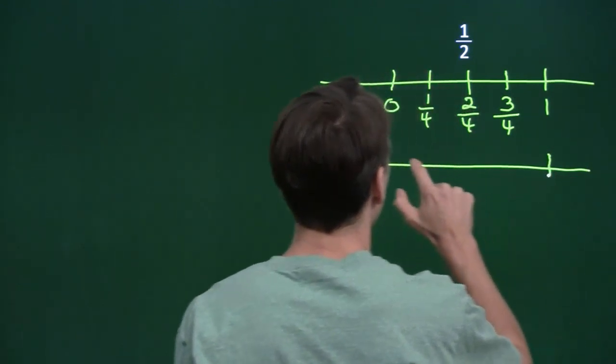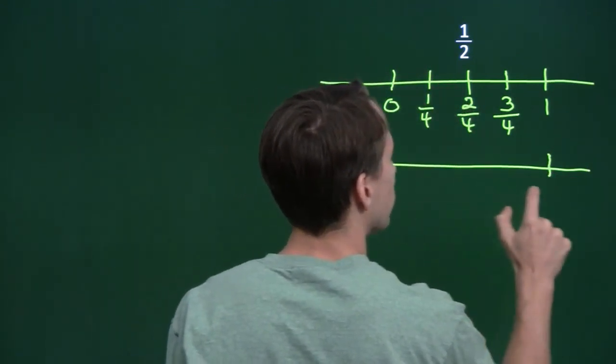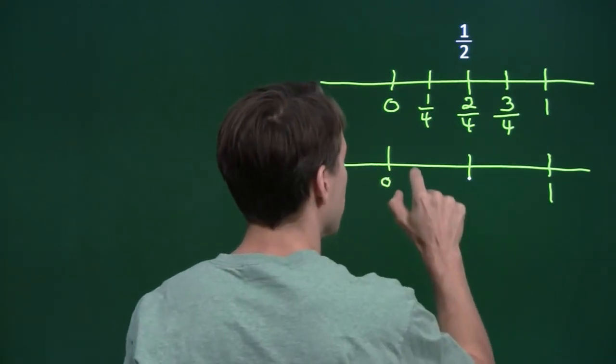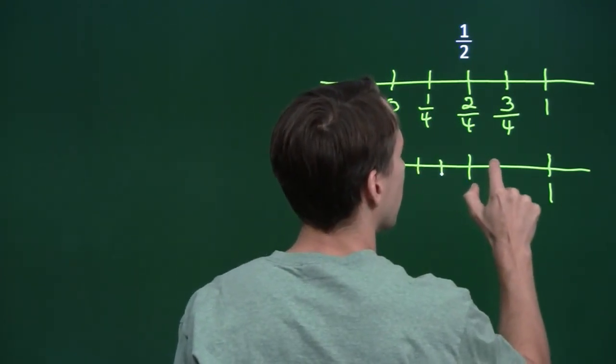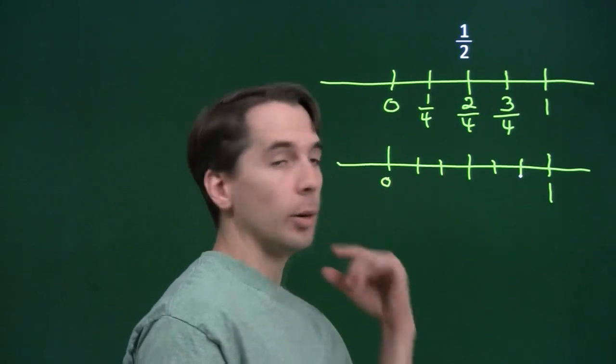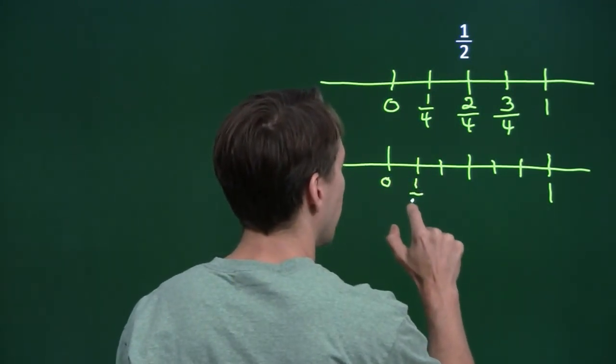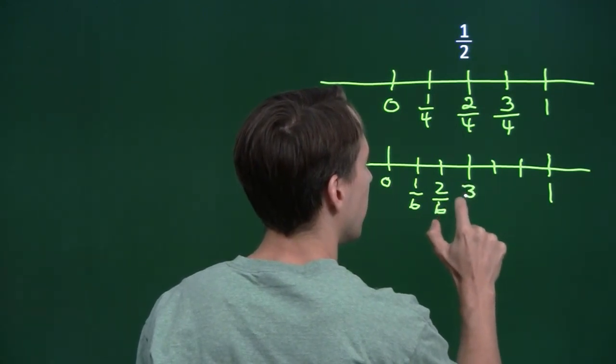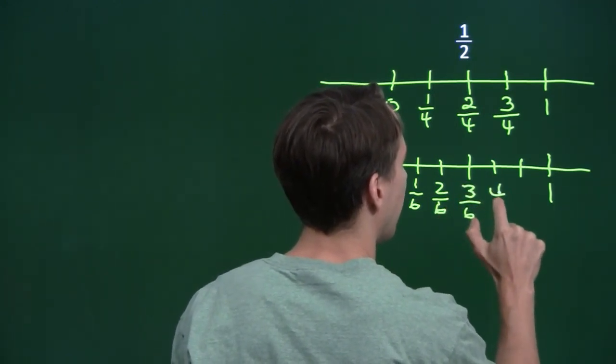Now, we also could have broken up each of our two smaller pieces into three smaller pieces each. And now we're breaking the number line up into sixths. So this is 1 over 6. This is 2 over 6. This is 3 over 6, 4 over 6, and 5 over 6.